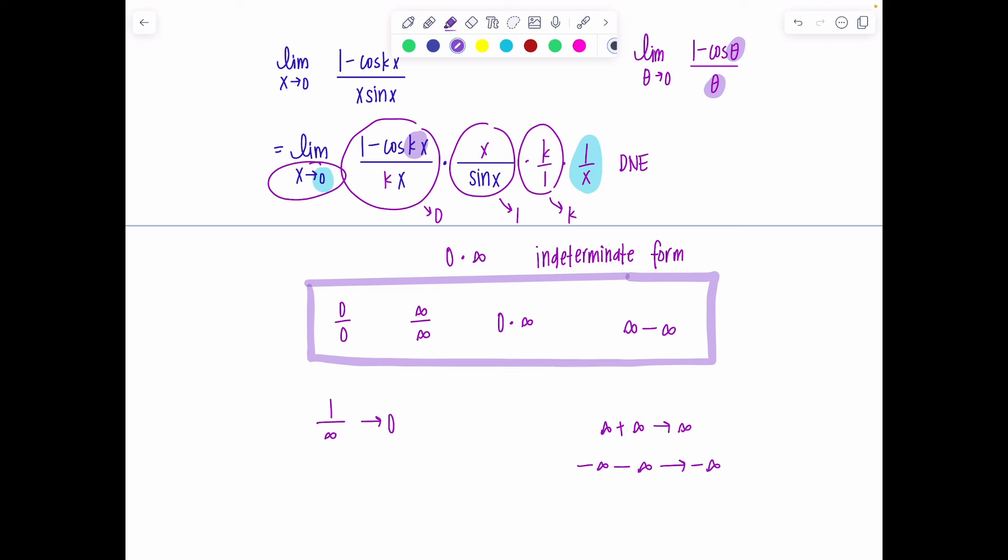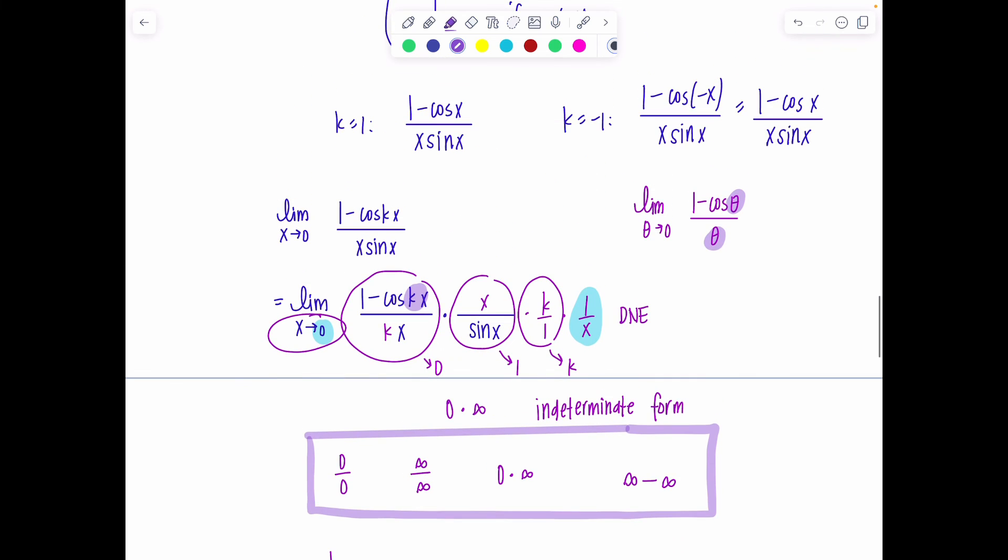Further investigation is required. What does further investigation mean? Factoring, multiplying by a conjugate, dividing by the highest power, using one of these limit rules. You got to play with it. And then later when you learn L'Hopital's rule, you can apply that to evaluating indeterminate forms of the type 0/0 or infinity/infinity. But that's later.